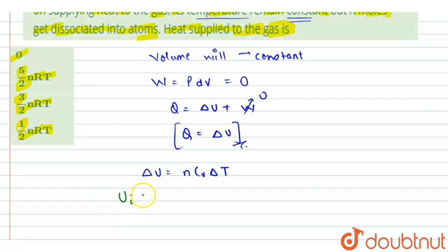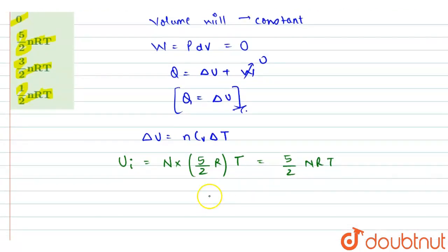So the initial internal energy can be found as: this is n Cv ΔT, and the initial number of moles are N, and Cv for diatomic gas is 5/2 R, times temperature T. So this we can write as 5/2 NRT.